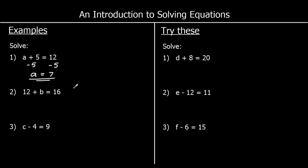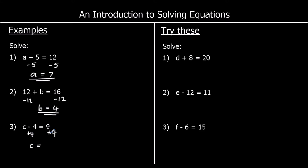For the second one, 12 plus b equals 16. If I take away 12 from both sides, I'll get b by itself. So b is equal to 16 minus 12, which is 4. For the third one, I've got c minus 4 equals 9. I can get c by itself by adding 4. So I'll plus 4 to both sides of the equation. c minus 4 plus 4 is just c. And 9 plus 4 is 13. So c is 13.